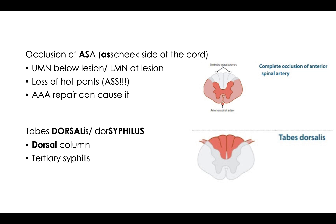Next is tabes dorsalis — or you can think of it as 'dorsisyphilis.' The word dorsal is literally in the name, so this is going to be a problem with your dorsal column. From the DCS video, a problem with the dorsal column means a problem with proprioception and fine touch. This is associated with syphilis — you can remember tabes tertiary syphilis, or dorsisyphilis, whatever helps you. Tabes dorsalis equals dorsal column involvement.